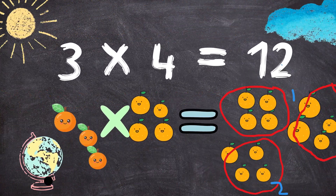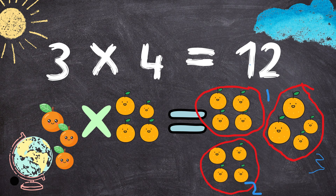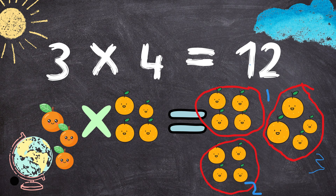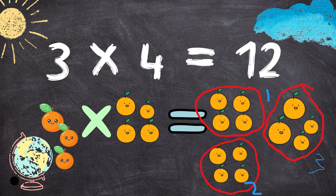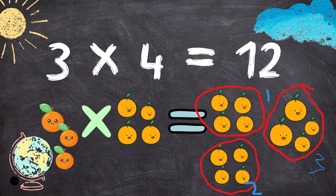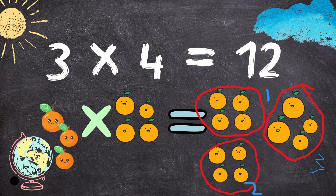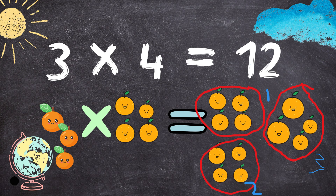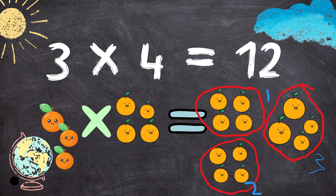Three times four equals to twelve. Three oranges multiplied by four oranges equals to twelve oranges.